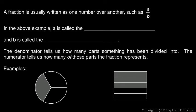A fraction is usually written as one number over another with a fraction bar in between them. The number on top could be a variable — like 'a over b' — or even an entire mathematical expression. It would still be a fraction: one thing over another.